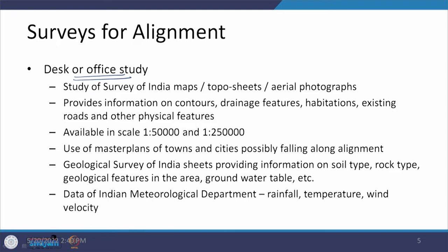The desired outcome is that you have to connect A and B, the two cities. Now what information is available to you? That information is available in terms of documents. What are the various types of documents which can be collected here?